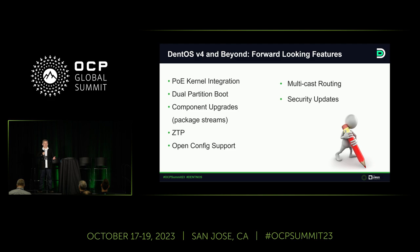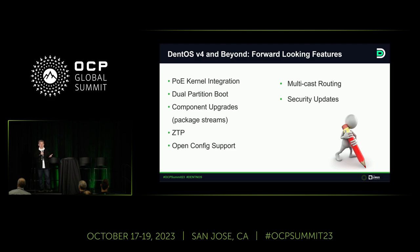Some long-term features we are talking about include PoE kernel integration, to increase our integration with the kernel. Dual partition boot is very important — we want to be able to update one partition while the second partition is still serving functionality, then switch to the updated partition with minimal interruption. We want to provide component upgrades for security — instead of uploading the entire OS, you'll be able to do package updates, which we're calling package streaming. ZTP, OpenConfig support, multicast routing, and security updates are also on our roadmap.